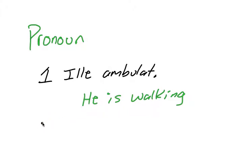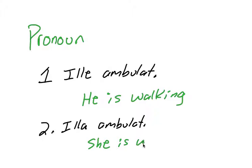And then illa ambulat would be she is walking. And so now we use the feminine and just use the pronoun she.